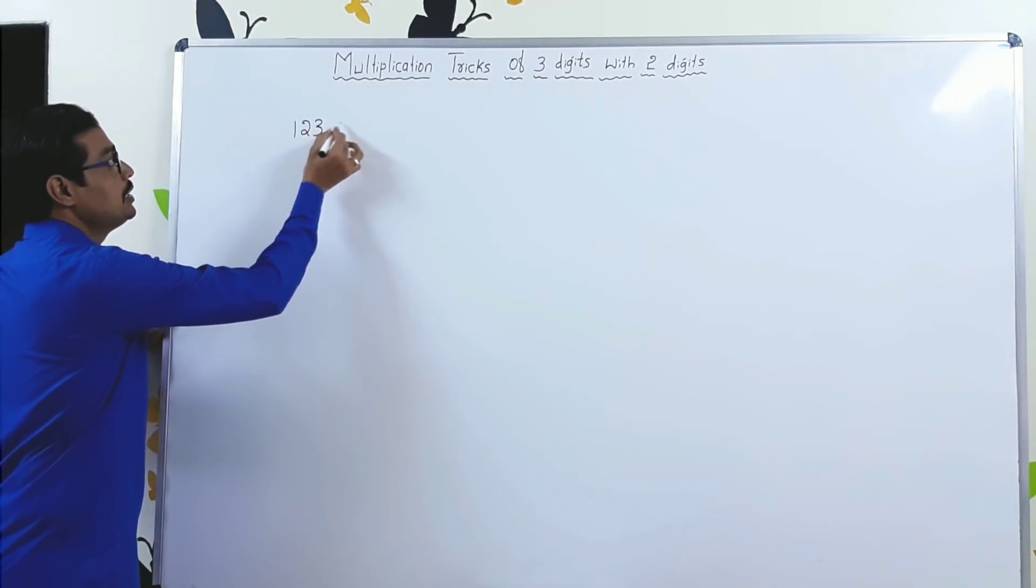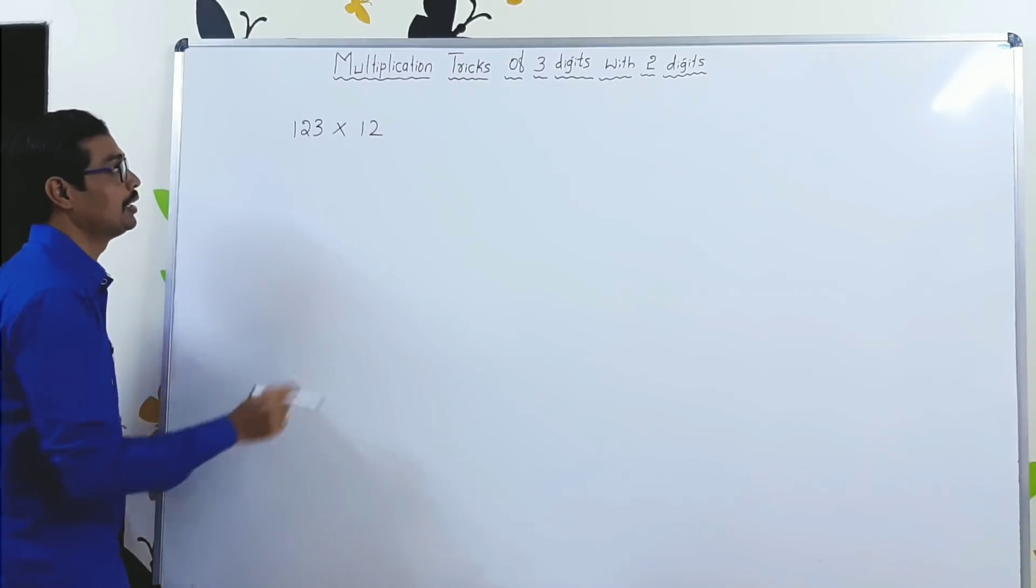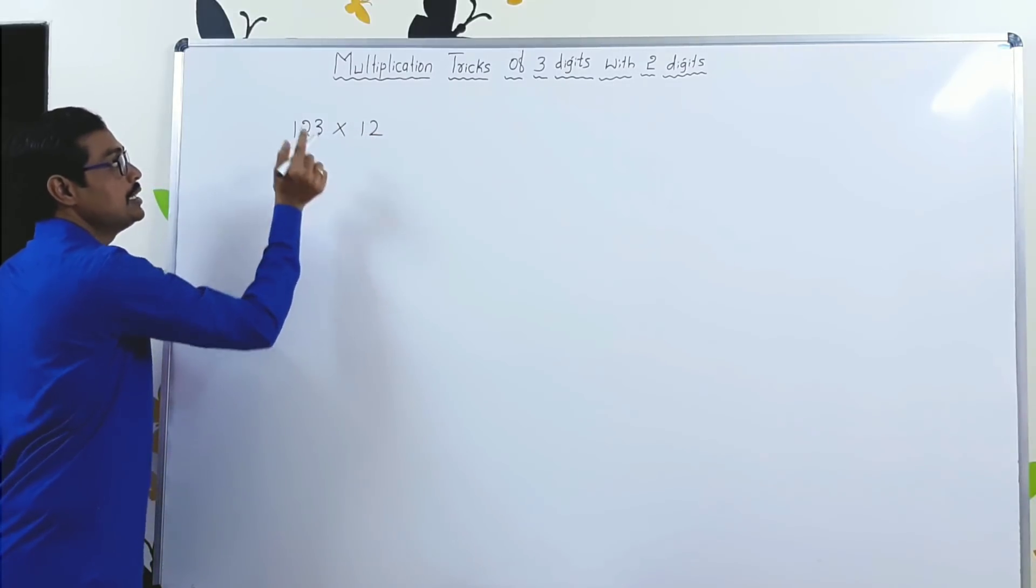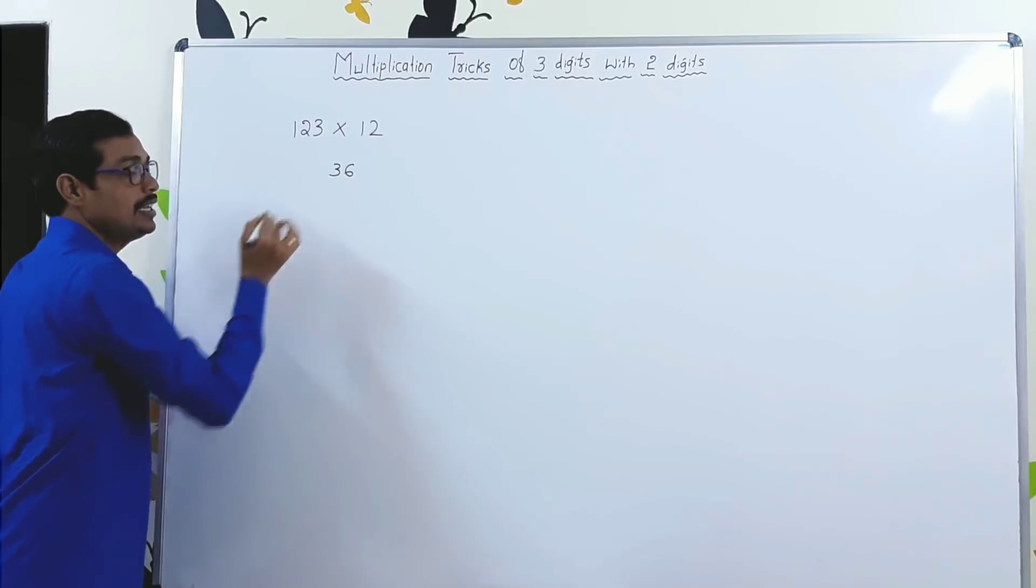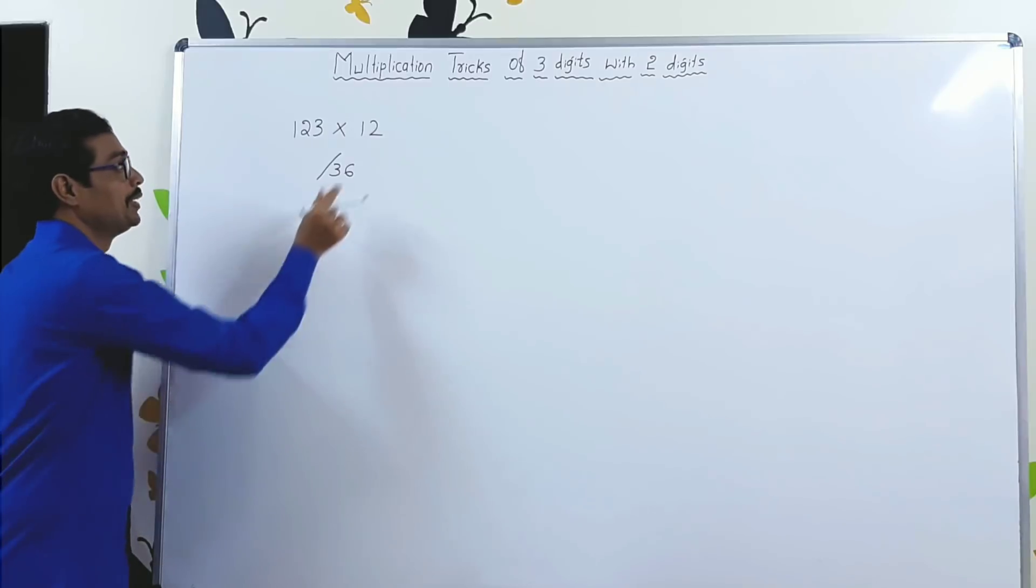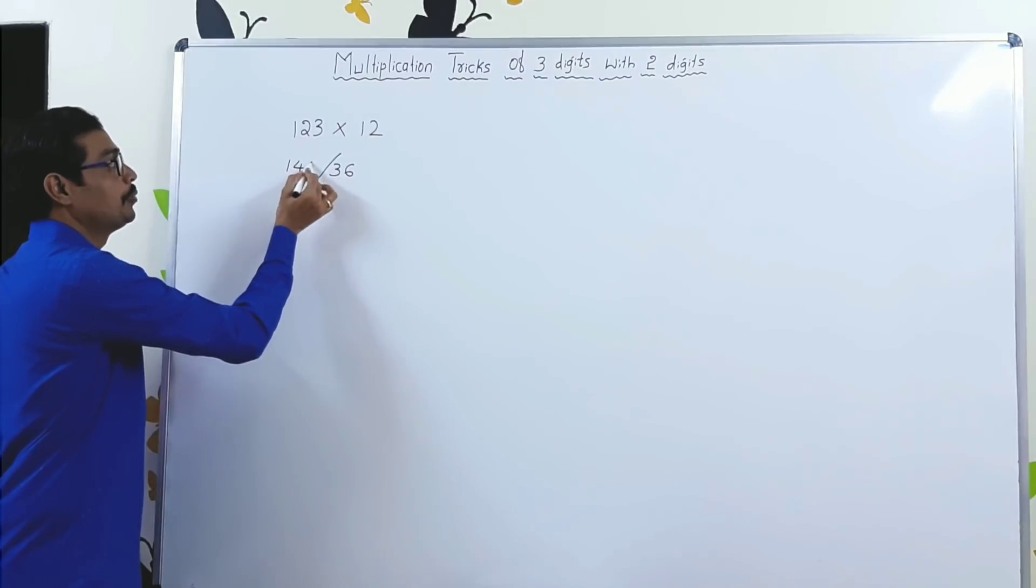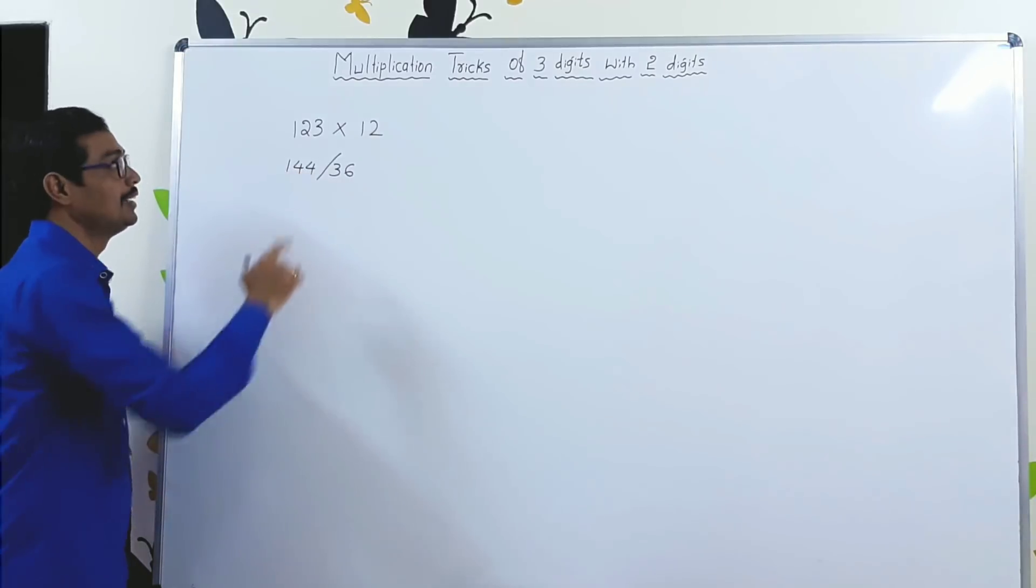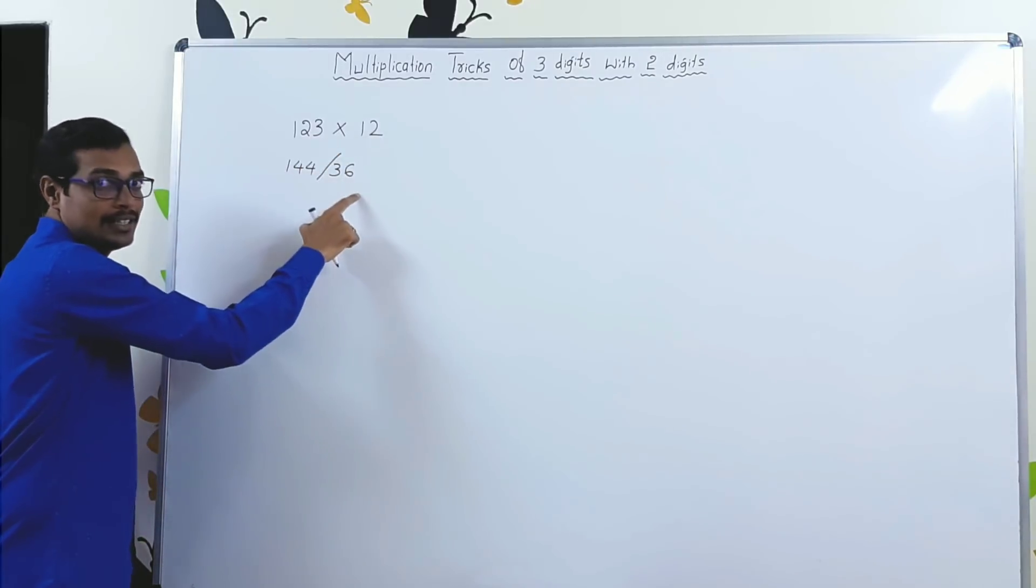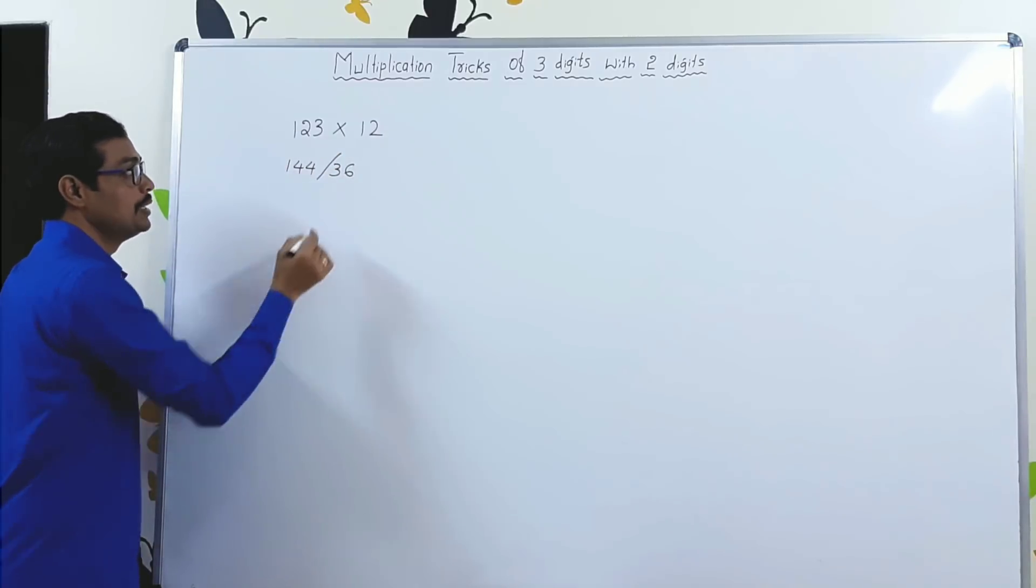123 into 12. Very simple. 12 × 3 is 36. Slash. 12 into 12, you know it very well. 144. 12 × 3 is 36. 12 into 12 is 144. Now, please remember.